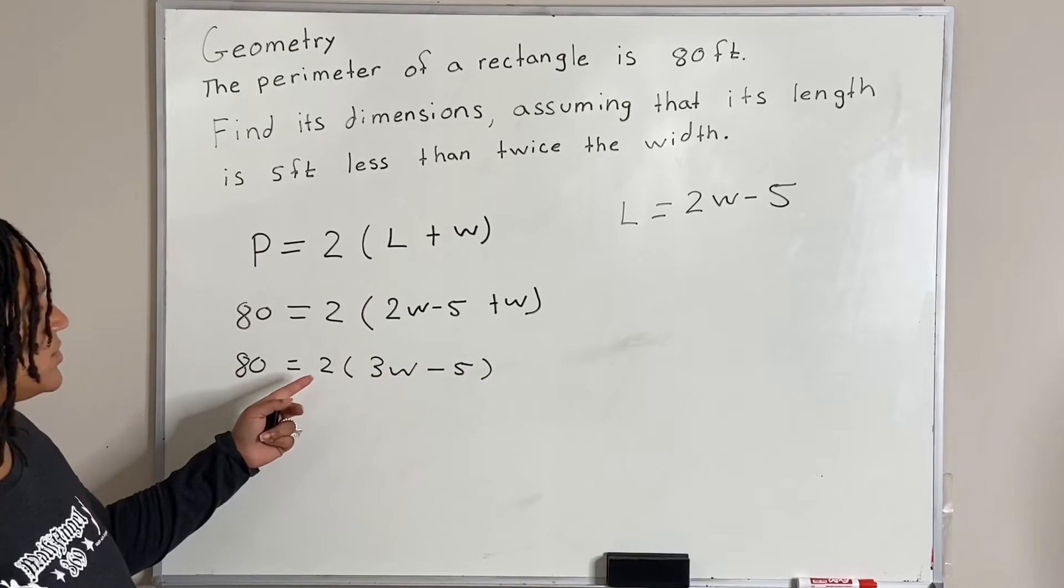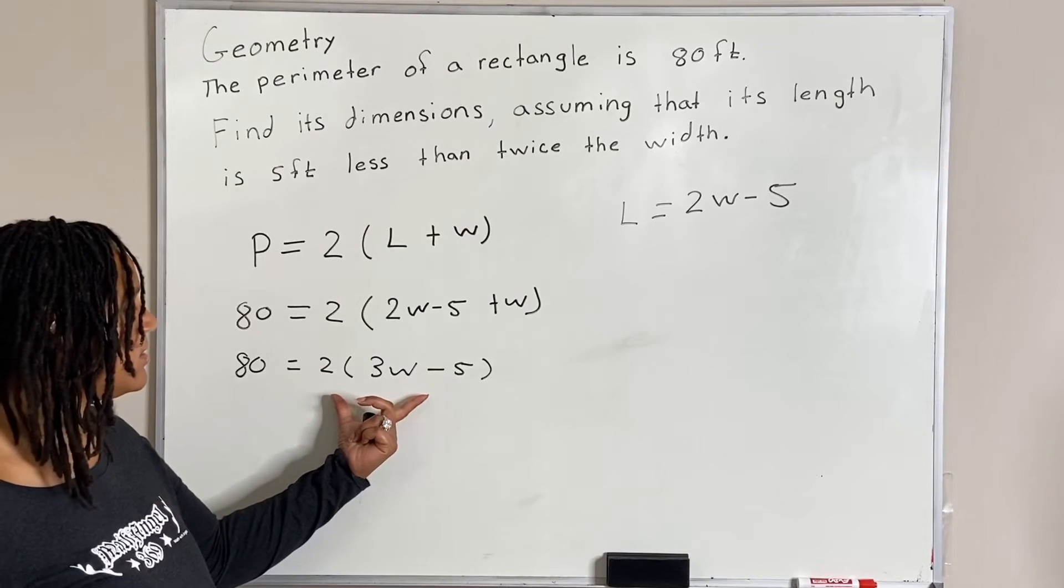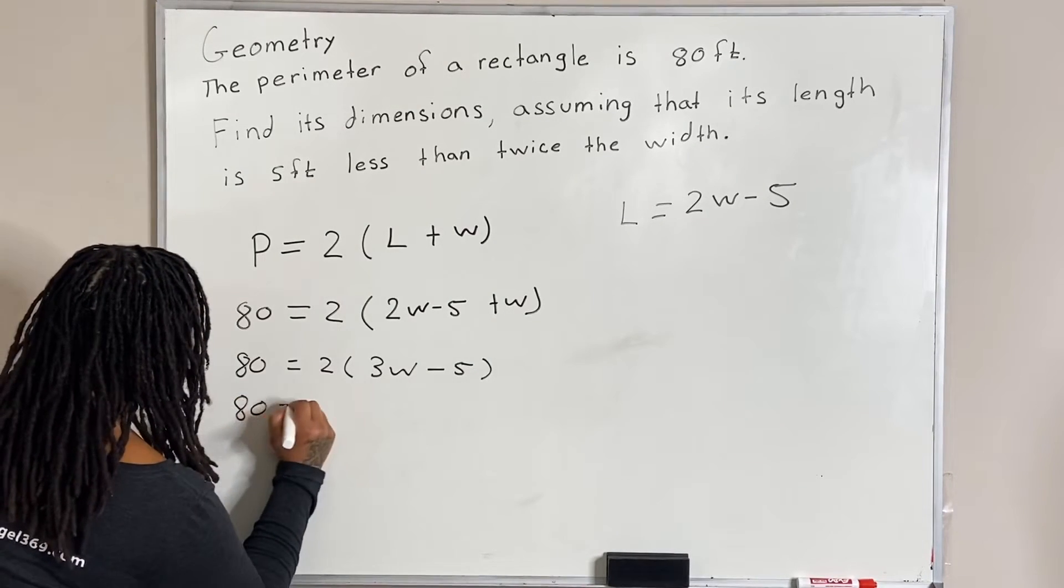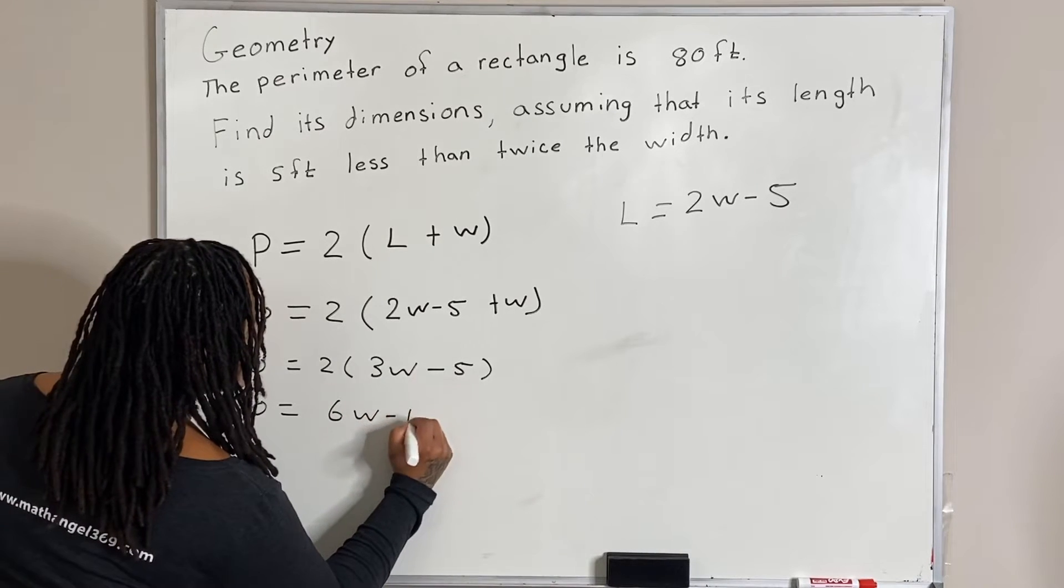Now we are going to use the distributive property and multiply these two together. So we have 80 is equal to 6w minus 10.